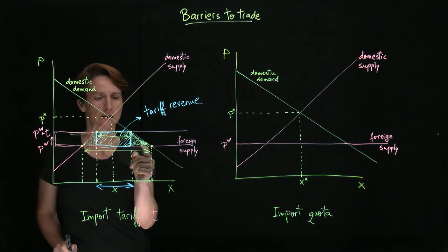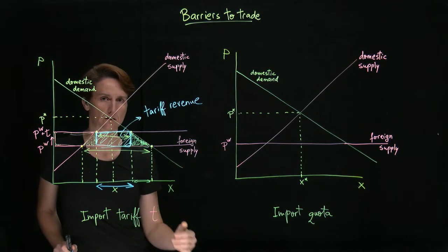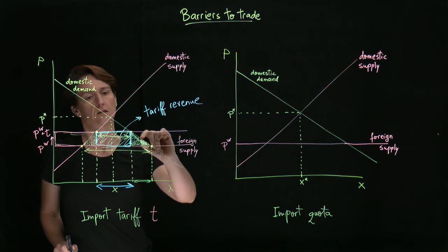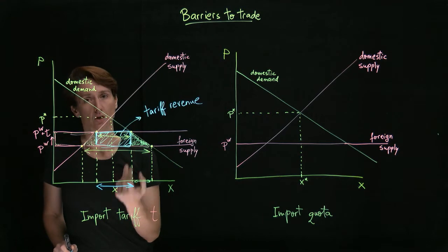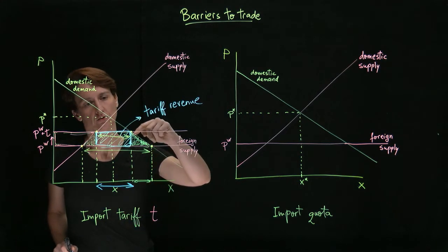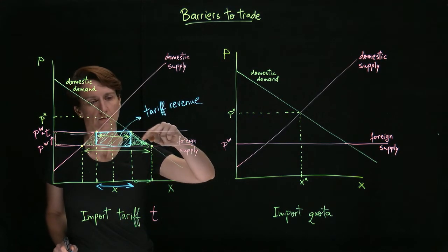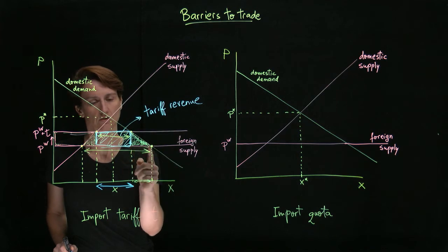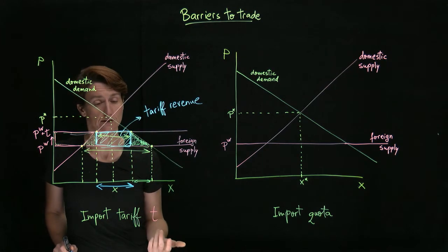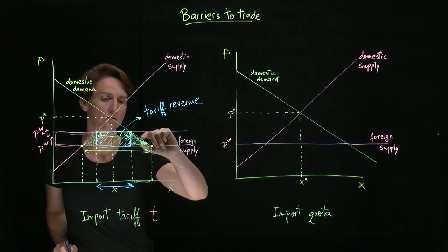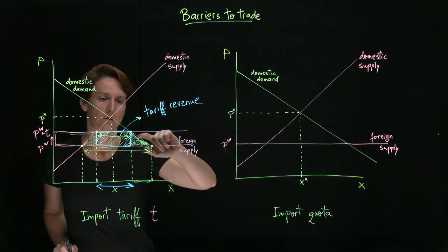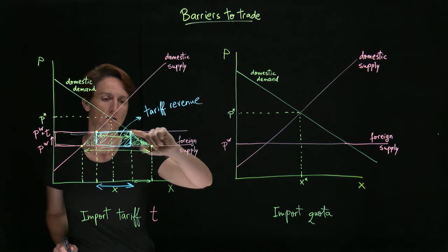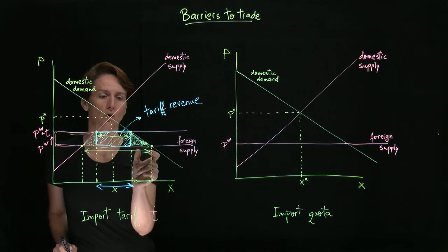Consumers had to cut back on how much they bought when the tariff was introduced. And so for each one of those units, what is lost is the fact that consumers were willing to pay more for each than it cost to produce them abroad. So there's a potential gain that is not realized anymore. So this economic surplus loss is due to lost consumption.